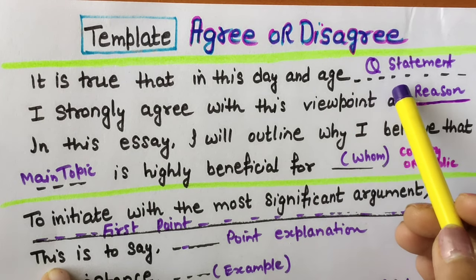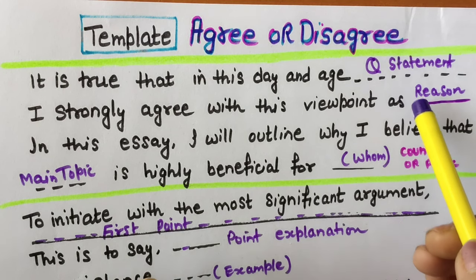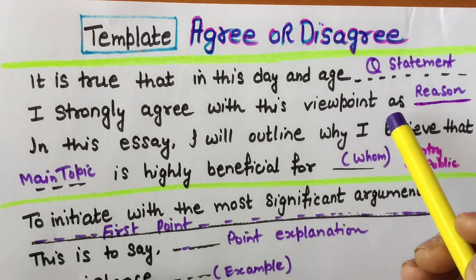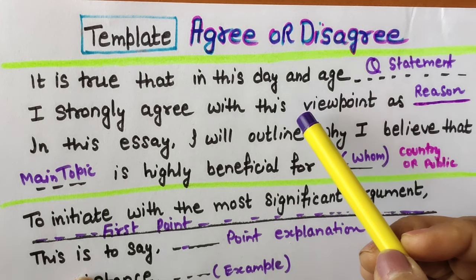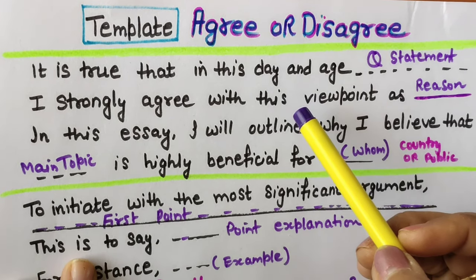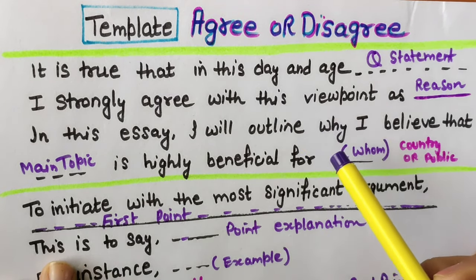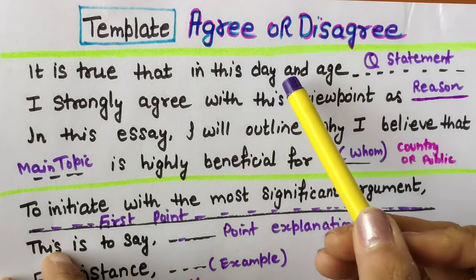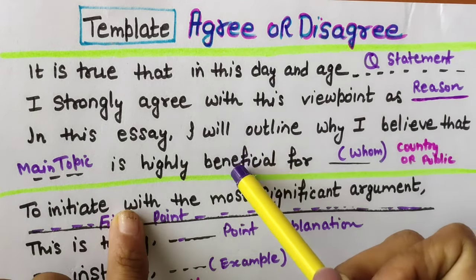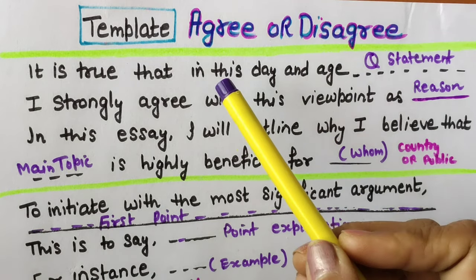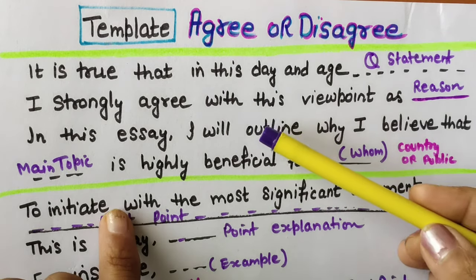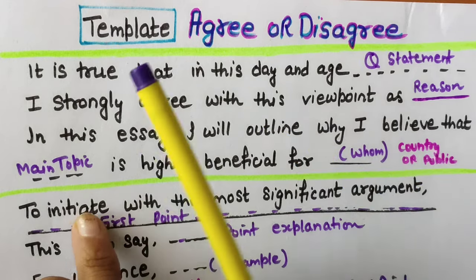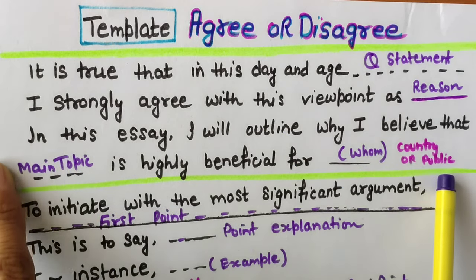Using only a template will not give you bands. You have to use the question statement, you have to give a reason, just think simple things about the question statement. Definitely you will get bands. Just follow the template of how I have written and I will explain one example of an agree or disagree essay, how you can fit this ready-made language into the essay. Take a screenshot of this scene — from here to here — this is your introduction.